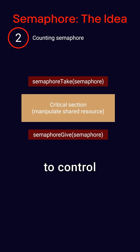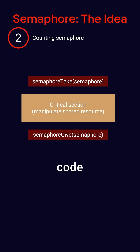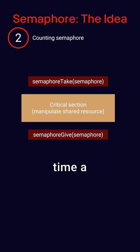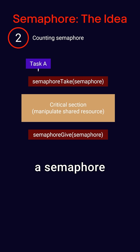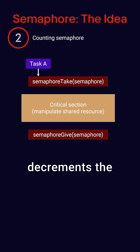In theory, semaphores are used to control access to some critical resource or section of code. For example, each time a task wants to enter a critical section, it must first acquire a semaphore. This decrements the semaphore counter using an atomic operation.